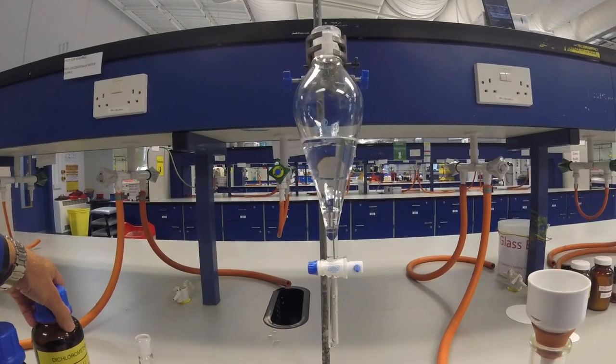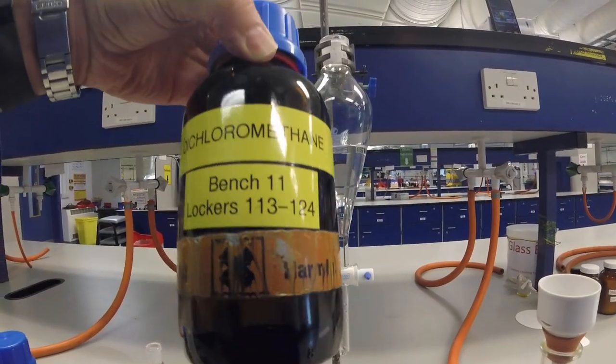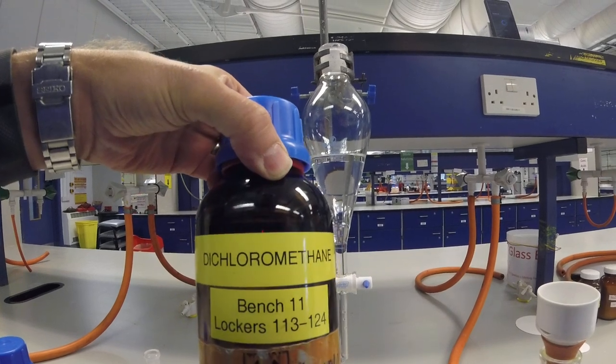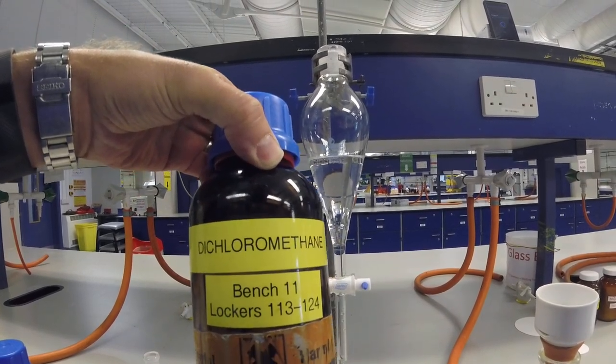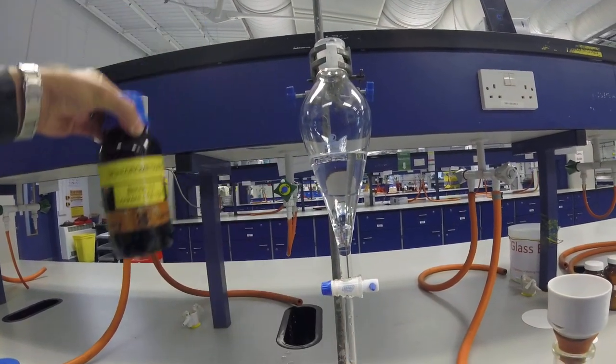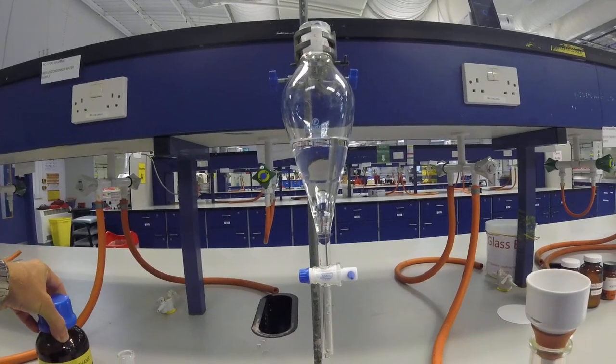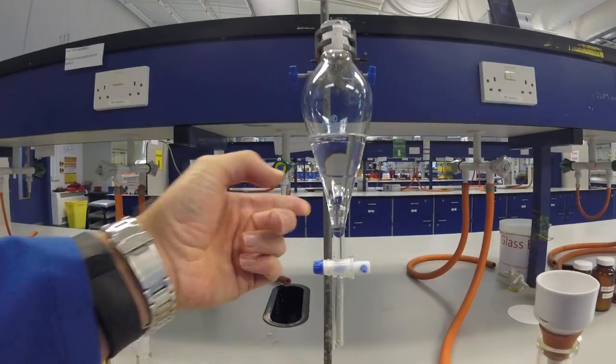The only difference comes when you get things like dichloromethane. So dichloromethane and chloroform, chlorinated solvents, are much more dense than water and so in separation they'd be on the bottom.